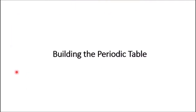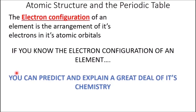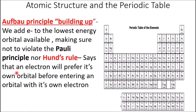Now that we've covered the Schrödinger atom, let's move on to building the periodic table. The electron configuration of an element is the arrangement of its electrons in its atomic orbitals. If you know the electron configuration of an element, you can predict and explain a great deal of its chemistry — that's why we spend so much time on this. The periodic table is constructed using the Aufbau, or 'building up,' principle.